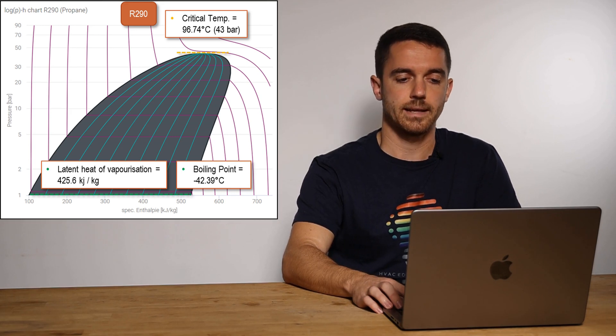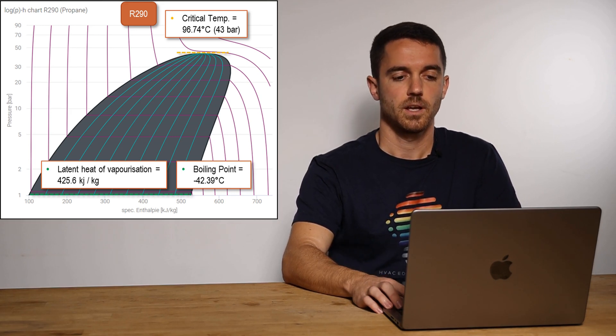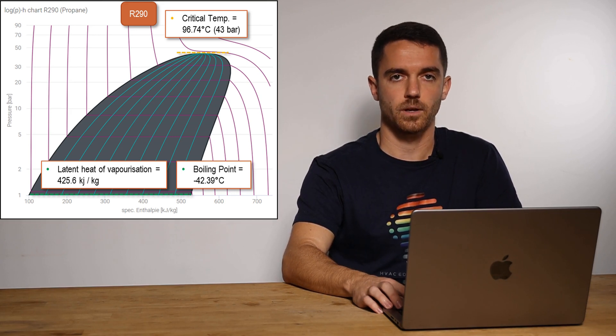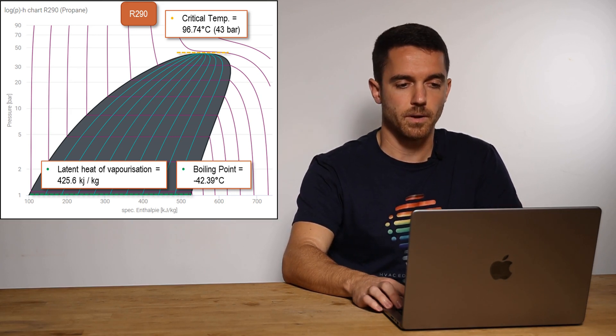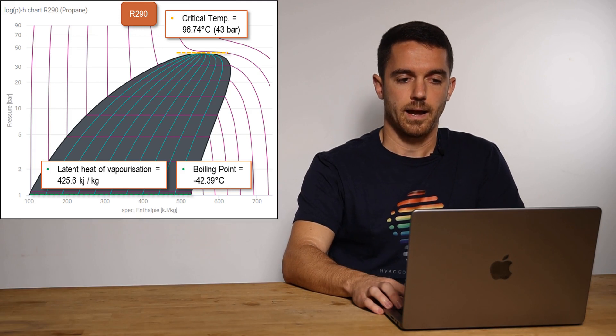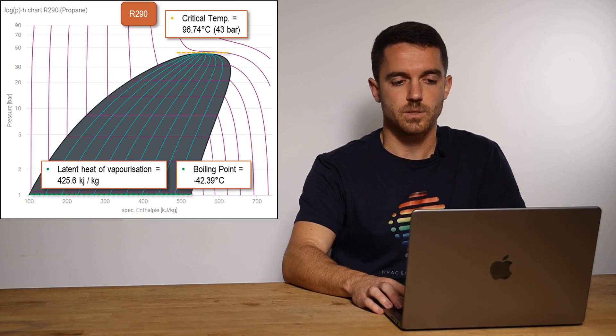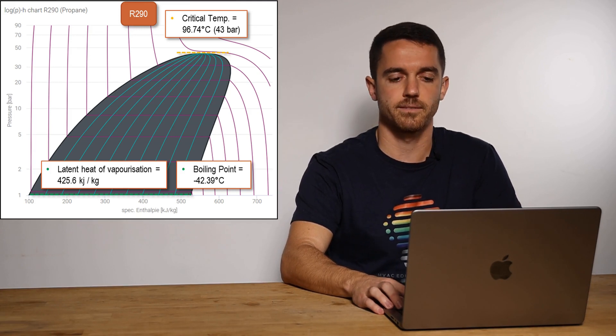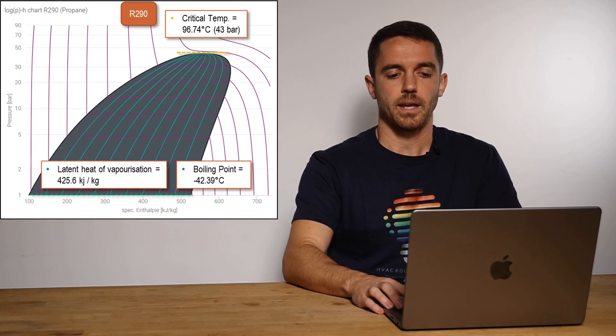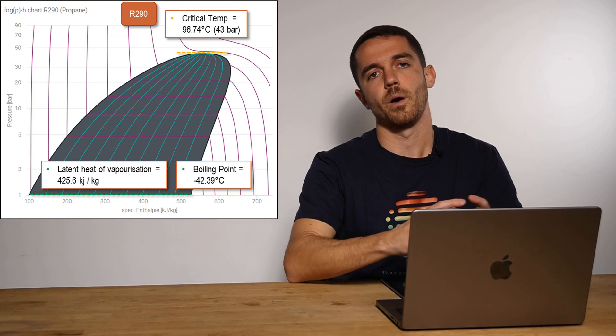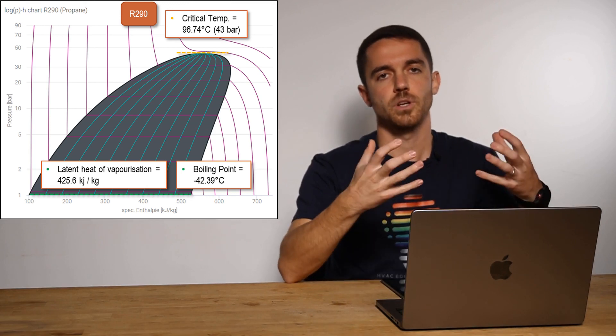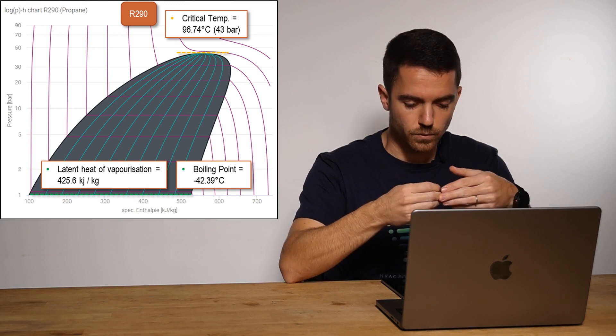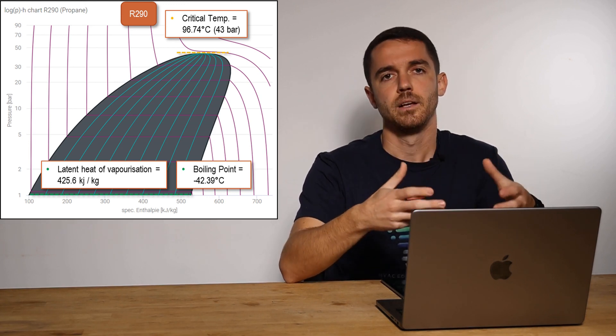Also, latent heat of vaporization is around 425 kilojoule per kilogram. So on our diagram, logarithmic pH chart, on one axis we have pressure in bar, and on another axis we have specific enthalpy in kilojoule per kilogram, so how much kilojoule of energy per one kilogram of our mass we can have.